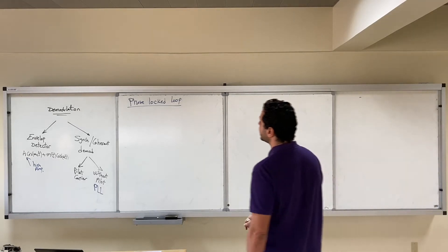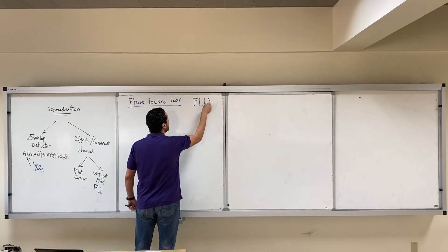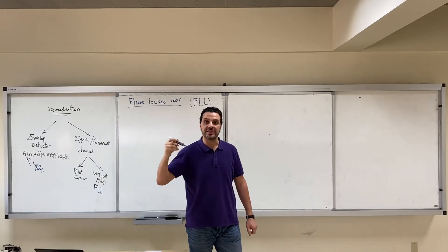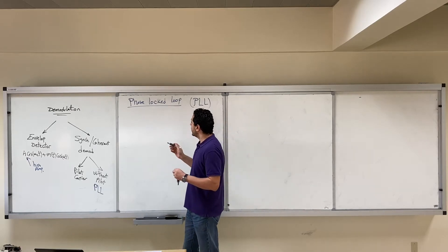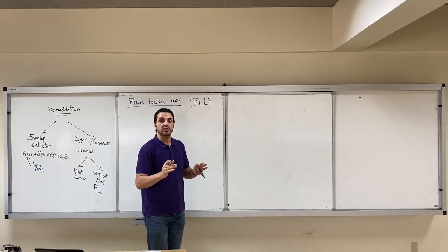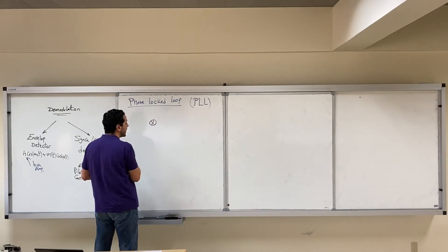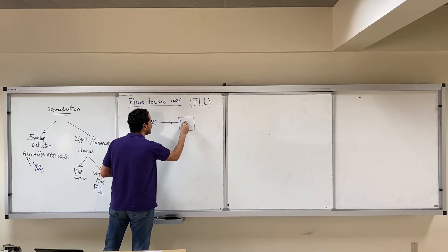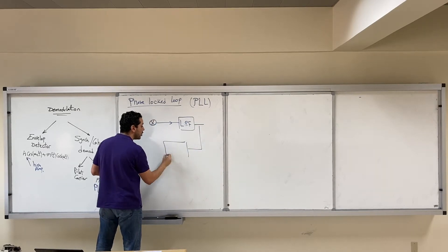In this video we are going to discuss the Phase-Locked Loop, which we abbreviate as PLL. This is a very important circuit that we are going to use now and again later in our course. It has many uses. The Phase-Locked Loop consists of three main components: the first is a multiplier, the second is a low-pass filter, and the third is called the VCO, voltage controlled oscillator.